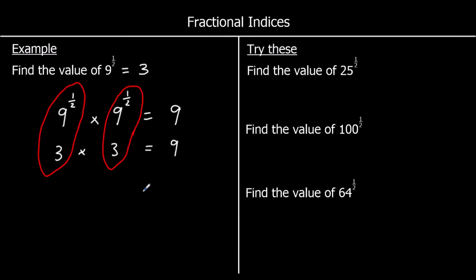So all you need to know is that the power of a half means square root. Here are three questions to try: find the value of 25 to the power of a half — that's square root of 25, which is 5. Find the value of 100 to the power of a half — that's 10. And 64 to the power of a half — that's 8.